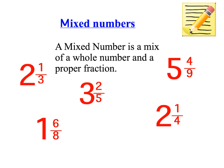So mixed numbers, as the name suggests, is a mixture of a whole number and a proper fraction. Obviously one part is the whole number, and the other part is the fraction. It's made up of a whole number and a proper fraction.